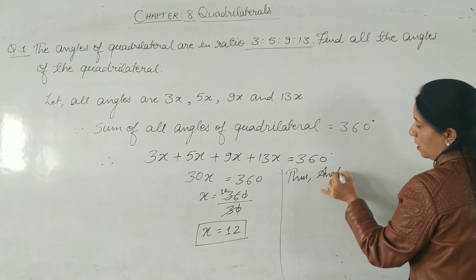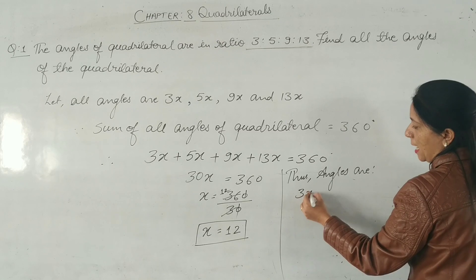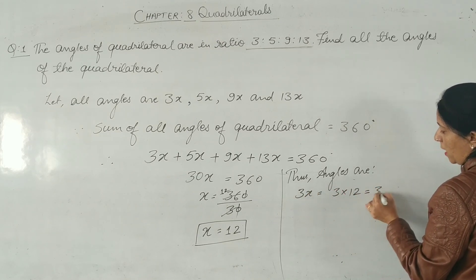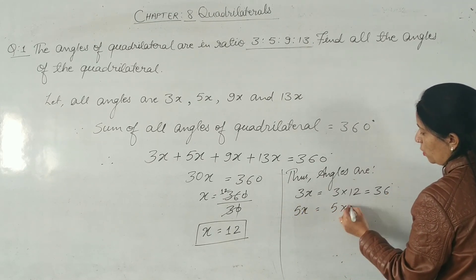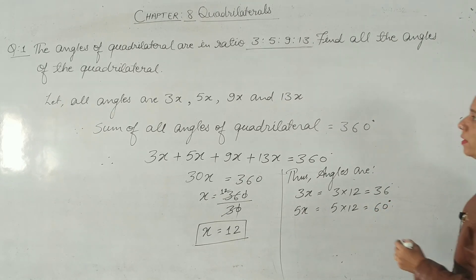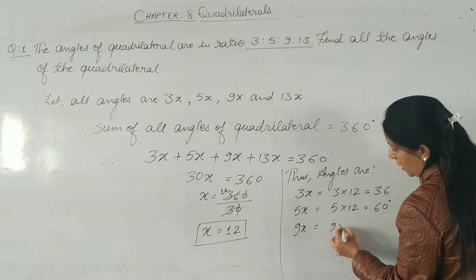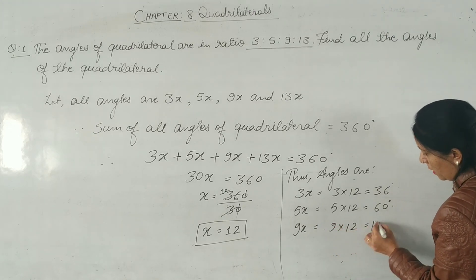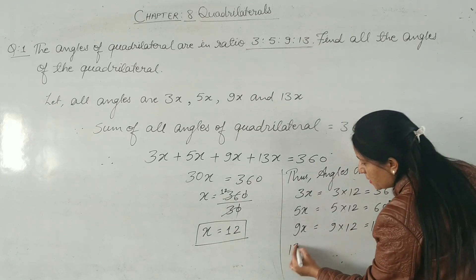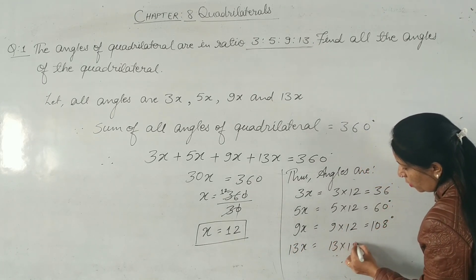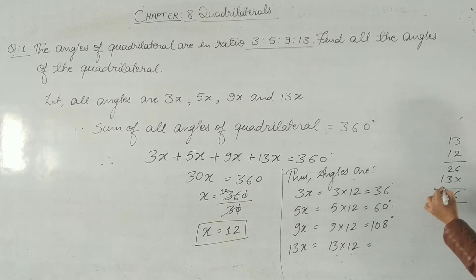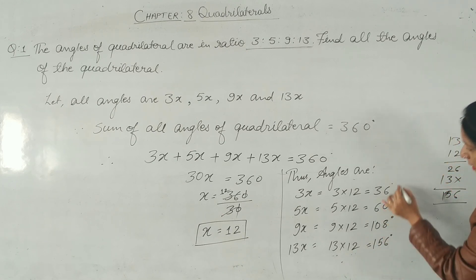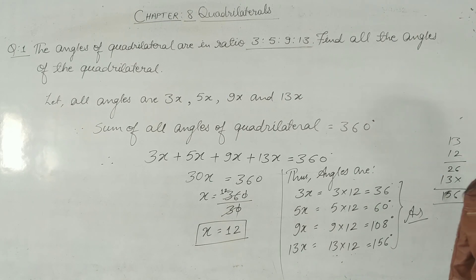Now we put the value of x into each angle. First angle: 3x = 3 × 12 = 36 degrees. Second angle: 5x = 5 × 12 = 60 degrees. Third angle: 9x = 9 × 12 = 108 degrees. Fourth angle: 13x = 13 × 12 = 156 degrees. So these are all the angles of the quadrilateral.